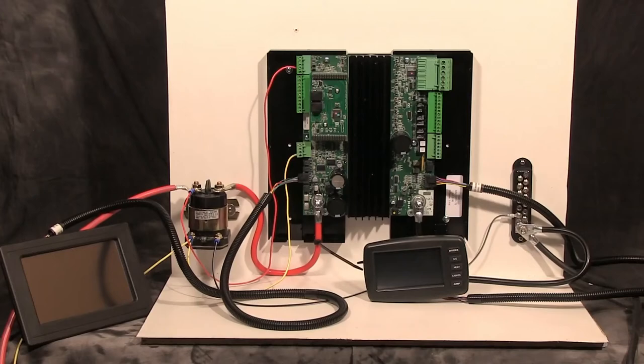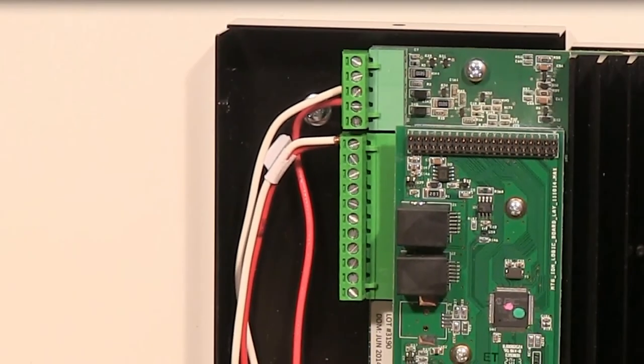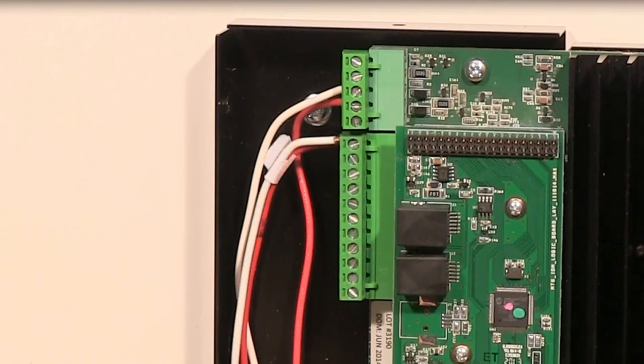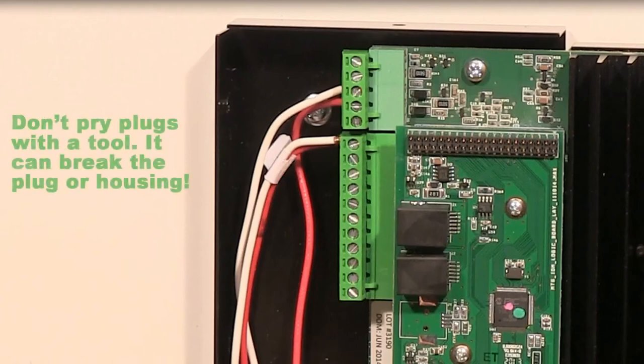Connecting components' wires to SmartTouch's IOM. Components can be connected directly to the IOM's pins, or you can remove the plug from the IOM and connect your wires, then press the plug back into the IOM. It's important to note that you do not want to remove the plugs by prying with a tool, risking breaking the plug or housing unit. Plugs can easily be removed by hand.